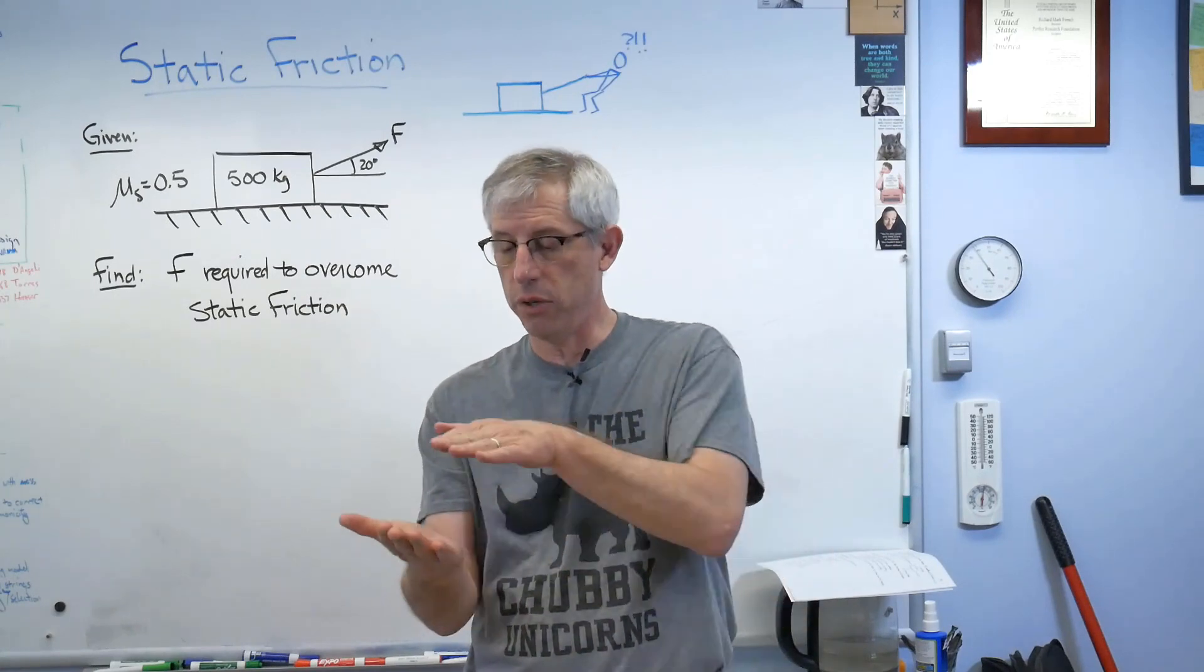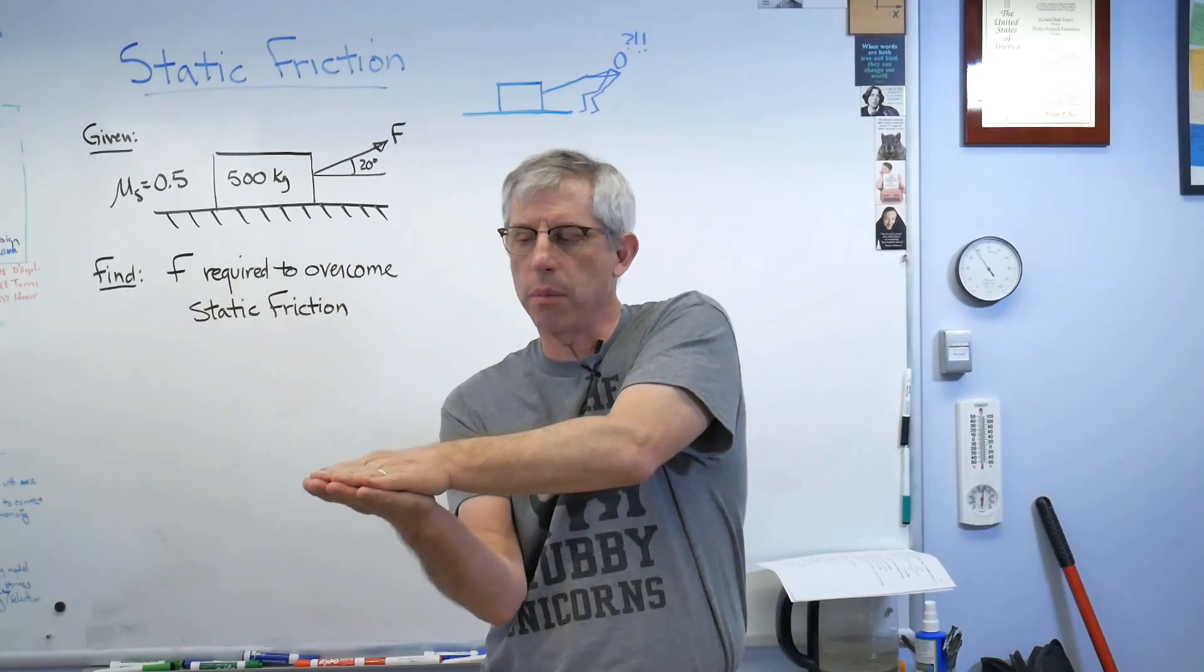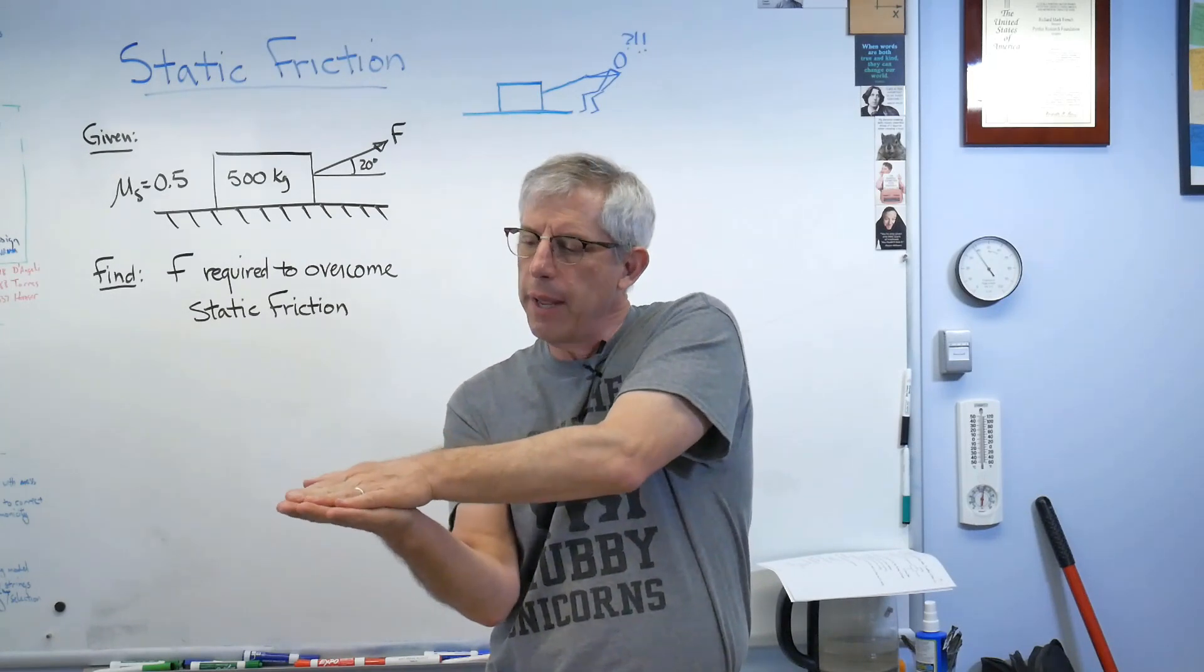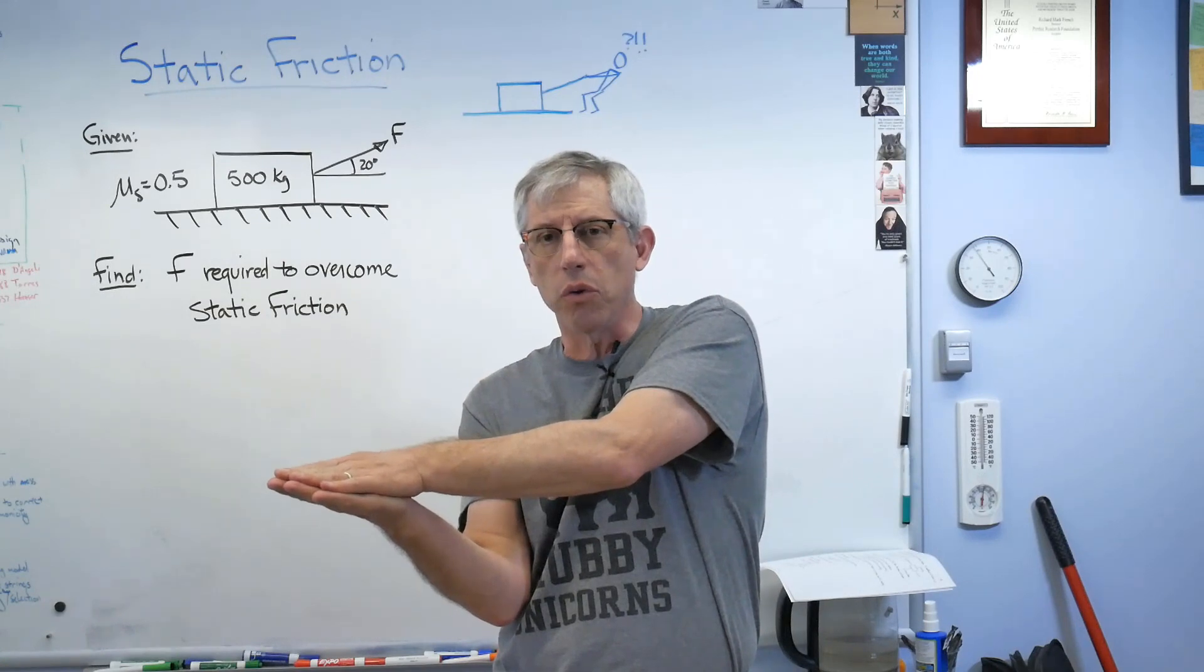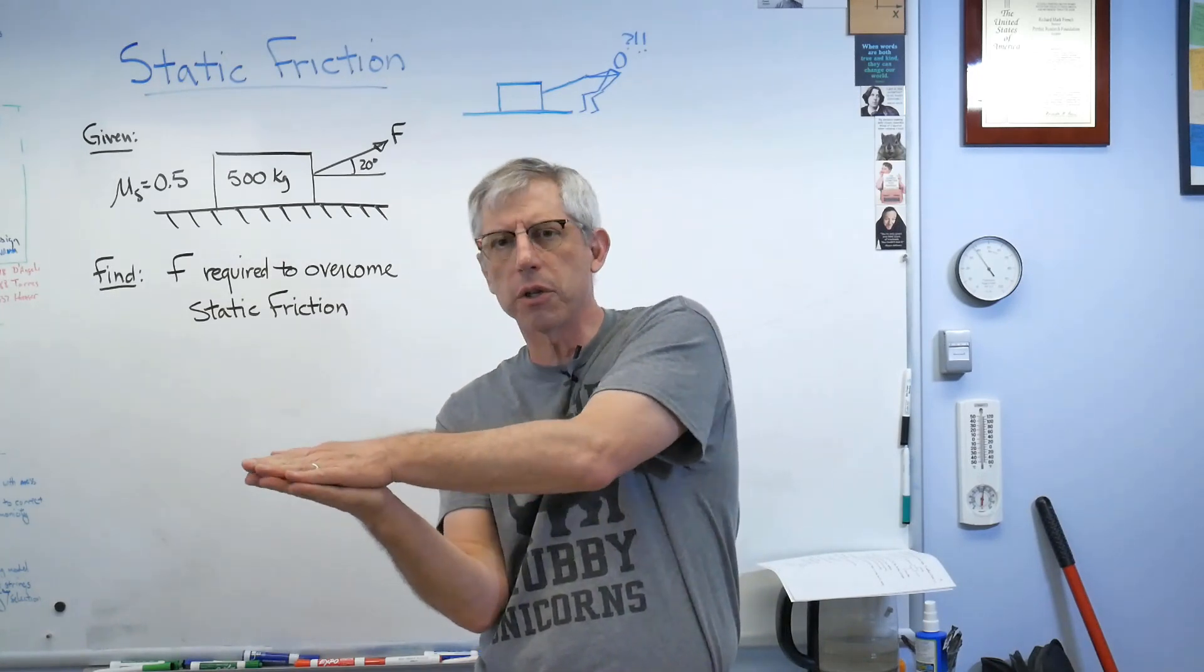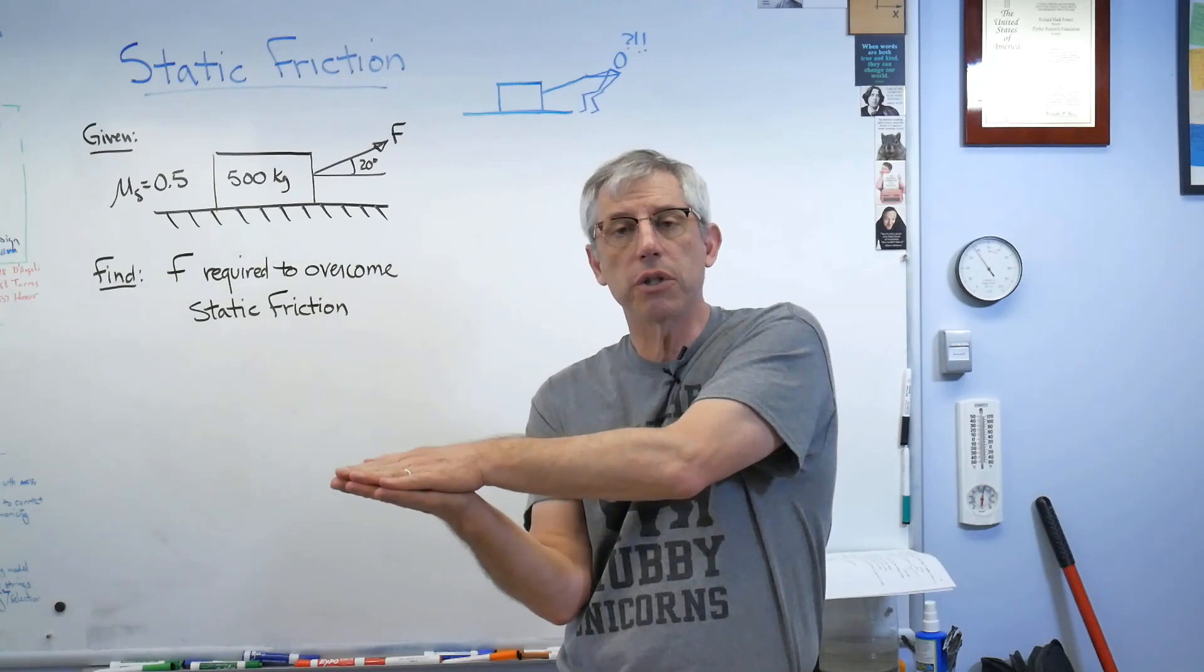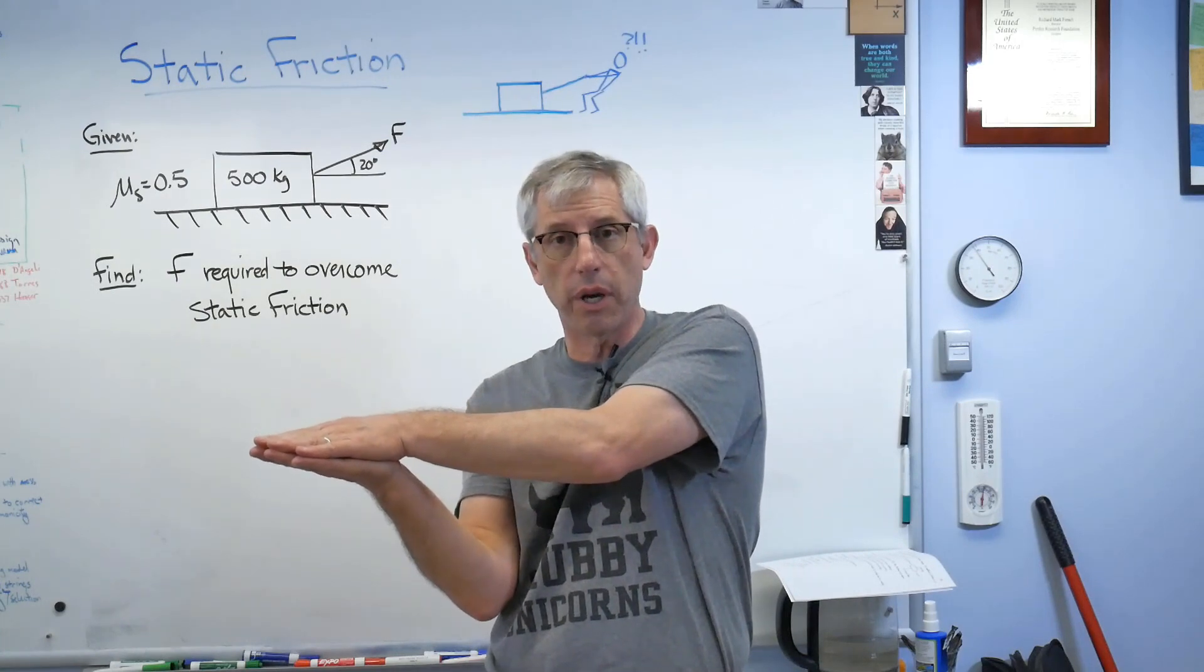So if you look at my two hands here, I'm pushing them together. This is a normal force between them. If I try to slide one past the other, if I don't push hard enough to make them move, they're not moving with respect to each other, but there's still a shear force between them. That shear force is generated by static friction. Static means they're not moving with respect to each other.